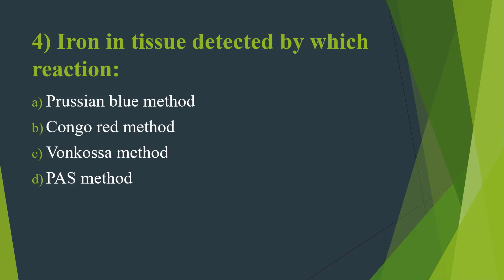Fourth question: Iron in tissue is detected by which reaction? Option A: Prussian blue method. Option B: Congruent method. Option C: Von Kossa method. Option D: PAS method. The answer is Option A — Prussian blue method, that is Pearl's Prussian blue. Congruent staining is used for amyloid tissue.